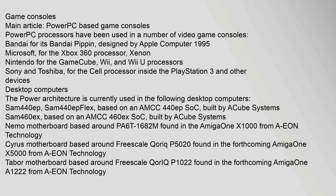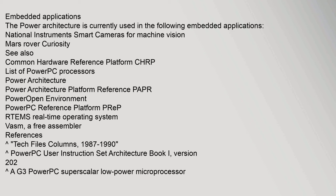The Power architecture is currently used in desktop computers including the SAM 440EP and SAM 440EP-Flex based on an AMCC 440EP SoC built by Acube Systems, the SAM 460EX based on an AMCC 460EX SoC, the NEMO motherboard based around the PA6T-1682M found in the AmigaOne X1000 from A-Eon Technology, and the Cyrus motherboard based around the Freescale CoreNet P5020 found in the forthcoming AmigaOne X5000. In embedded applications, the Power architecture is used in National Instruments smart cameras for machine vision and the Mars Rover Curiosity.